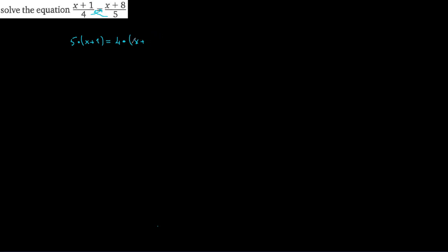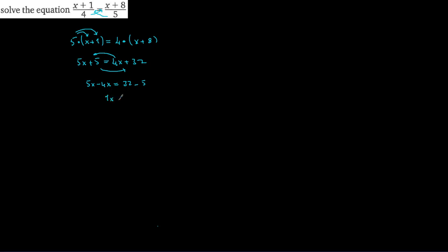Applying the distributive rule: 5x + 5 equals 4x + 32. Now 4x moves to the left side, giving 5x − 4x, and 5 moves to the right, giving 32 − 5. So 1x equals 27, and therefore x equals 27, which is the solution to the question.